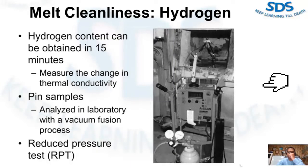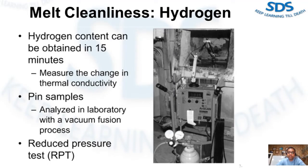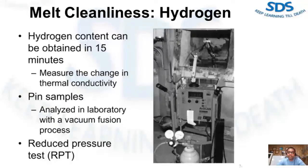While costly, hydrogen content in cubic centimeters or milligrams of hydrogen per 100 grams of aluminum can be obtained in 15 minutes. The principle involved is to measure the change in thermal conductivity when a carrier gas like argon absorbs hydrogen from the melt through a special probe. Collector pin samples are another method for hydrogen determination — samples are taken in the plant and later analyzed in the laboratory with the vacuum fusion process, in which the volume of gas liberated is measured during melting of the pin. A common though purely qualitative means of evaluating hydrogen porosity is by use of the reduced pressure test.